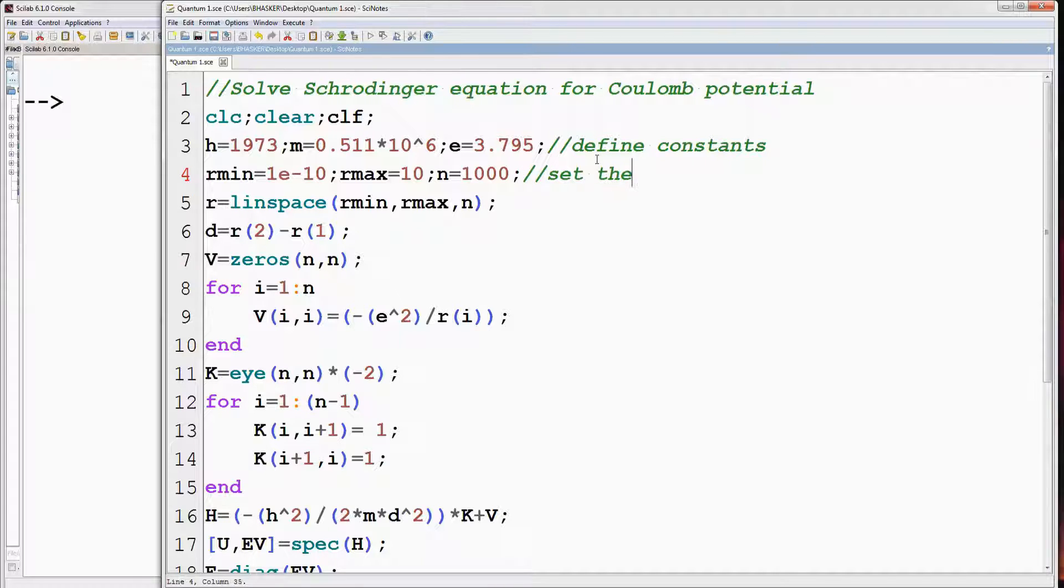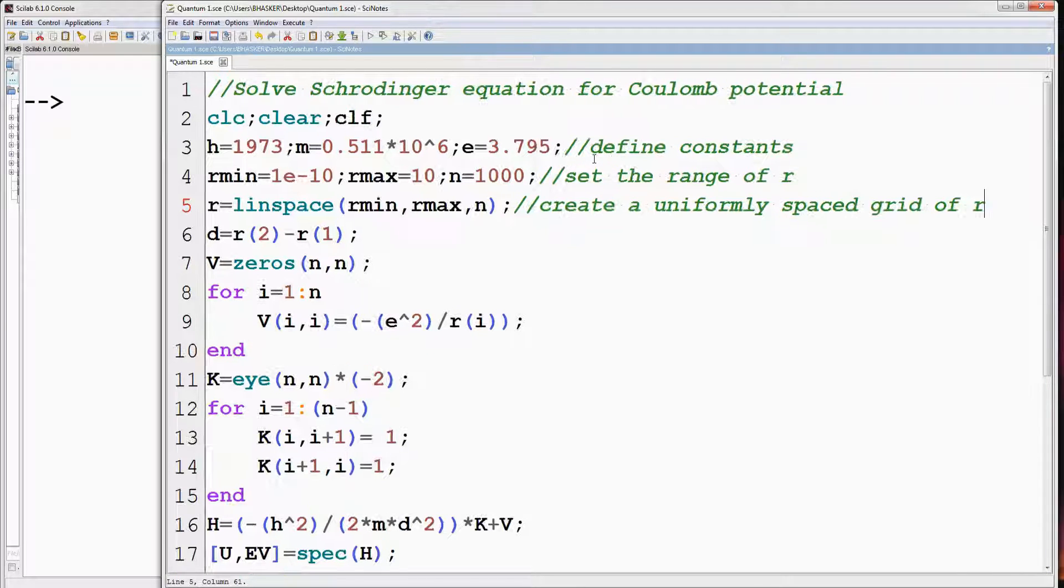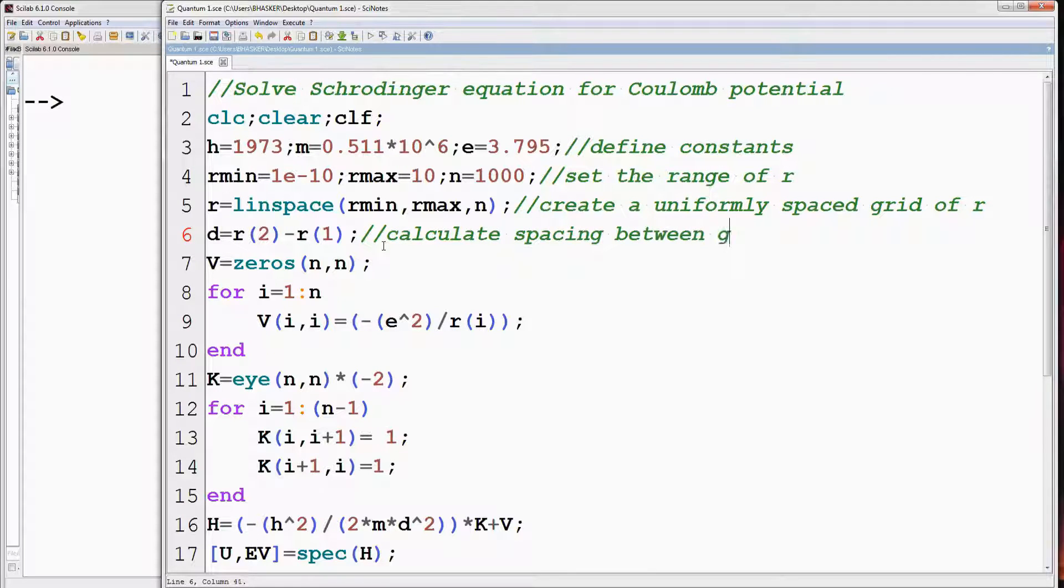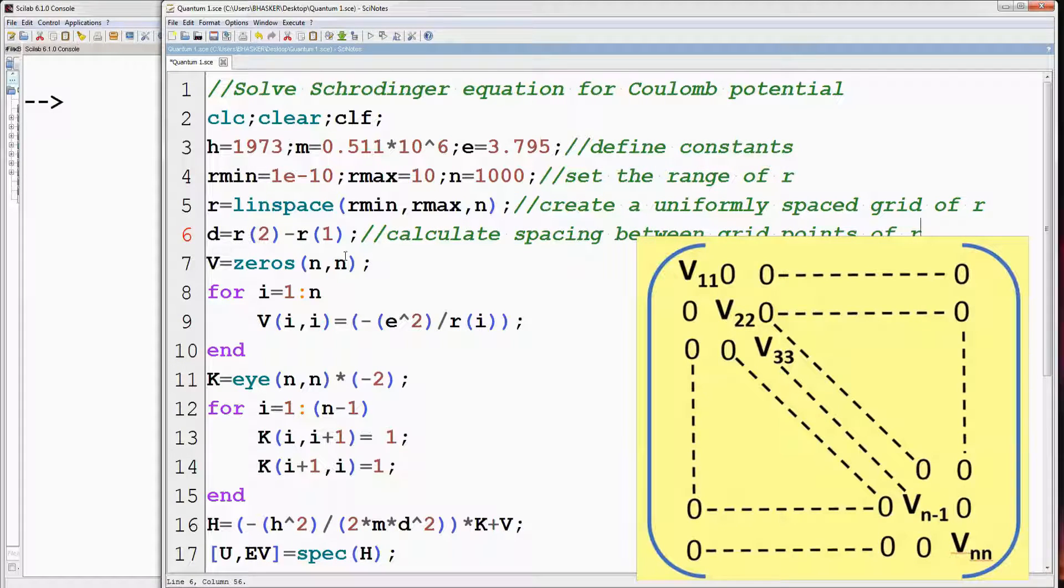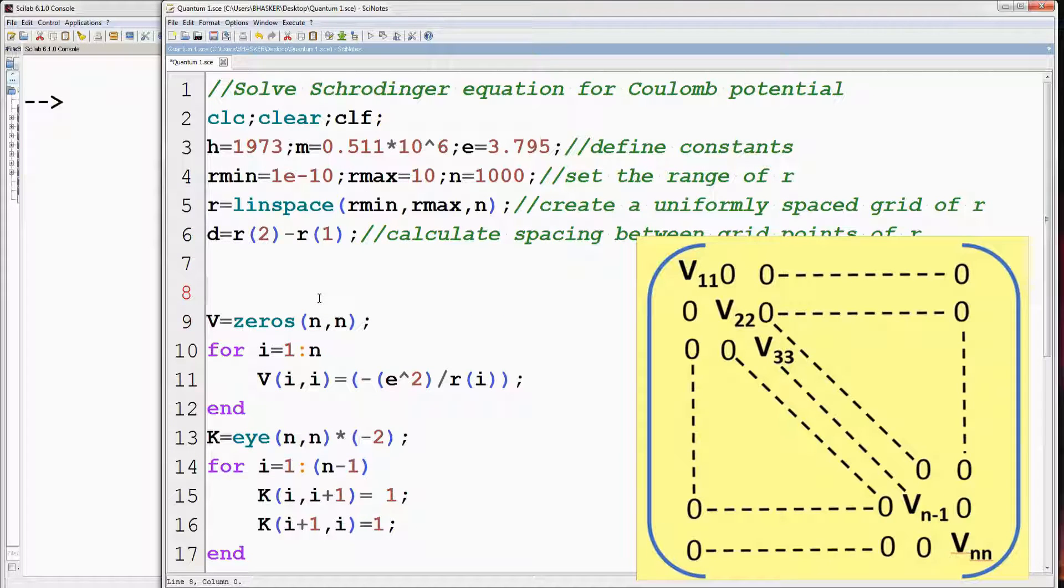Then the range of R is defined. Then a uniformly spaced grid of R is created. The distance between successive grid points is also calculated.